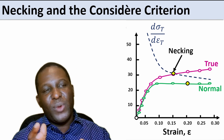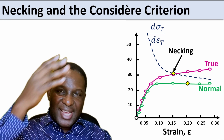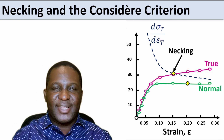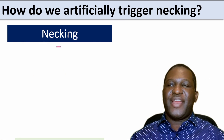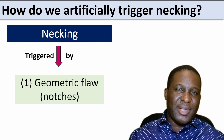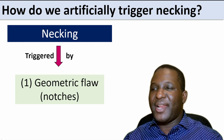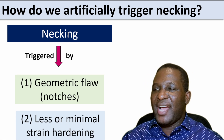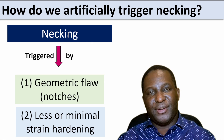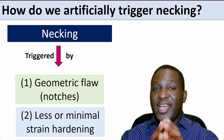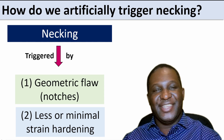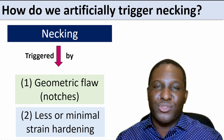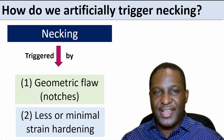So if we're going to explore the necking response, we plot the true stress and compare it with the slope dσ_T/dε_T. Taking all that information together, to trigger necking within a material artificially, two things must be in place: first, there has to be a geometric flaw — which could be in the form of a notch — and second, there has to be minimal strain hardening within the material. That's what Considère established. Now let's go into Abaqus and begin to set up these experiments.